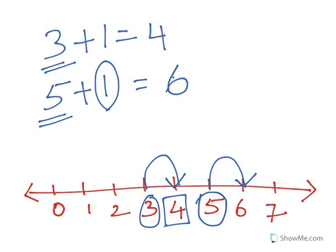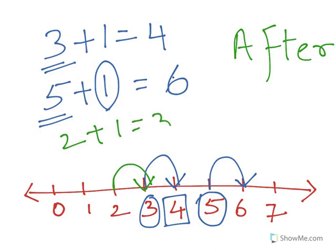Here the kids must understand that the plus one of any number will eventually become the number coming after. So the number coming after 2 is number 3, so 2+1 becomes 3. The number coming after 6 is 7, so 6+1 equals 7.